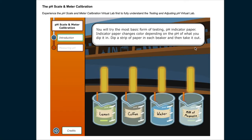You will try the most basic form of testing, pH indicator paper. Indicator paper changes color depending on the pH of what you dip it in. Dip a strip of paper in each beaker and then take it out.